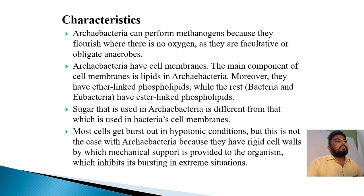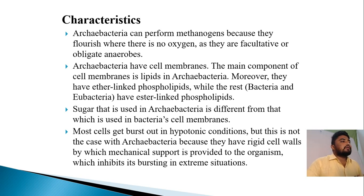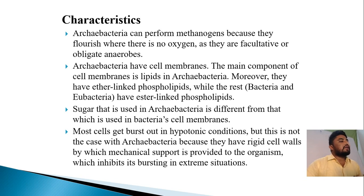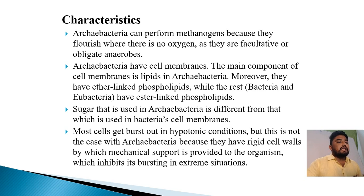The archibacteria characteristics: archibacteria can perform methanogenesis because they flourish where there is no oxygen, as they are facultative or obligate anaerobes. Archibacteria has a cell membrane. The main components of the cell membrane are lipids. They have ether-linked lipids while the rest have ester-linked lipids. The sugar used in archibacteria is different from that used in bacteria's cell membranes. Most cells burst in hypotonic conditions, but this is not the case with archibacteria because they have rigid cell walls which provide mechanical support and inhibit bursting in extreme situations.